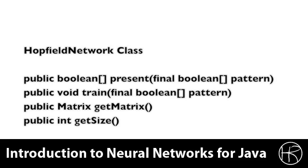The present method is used to present a pattern to the Hopfield neural network and get the result back. The train method is used to train the neural network to recognize one individual pattern. The getMatrix method is used to get a copy of the matrix. The getSize method returns the size of the Hopfield neural network — that is, how many neurons actually make up this Hopfield neural network.